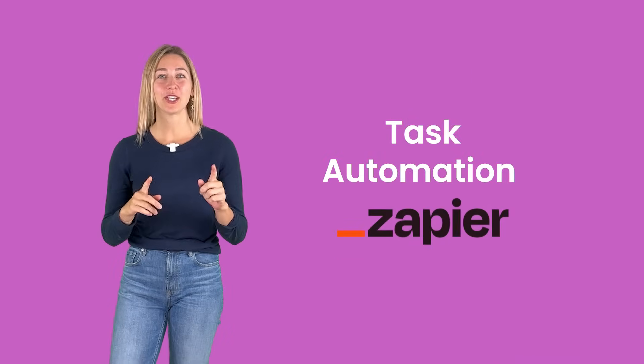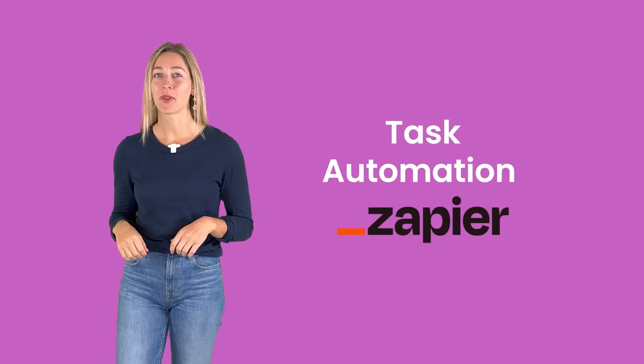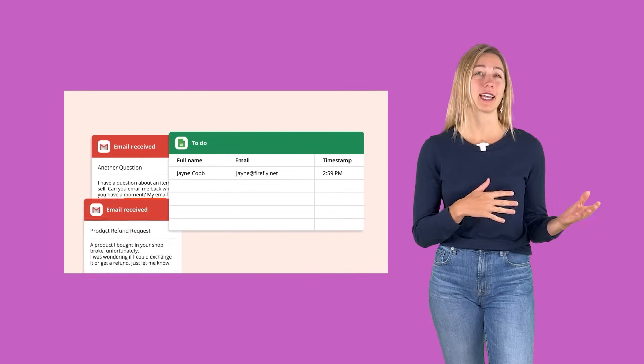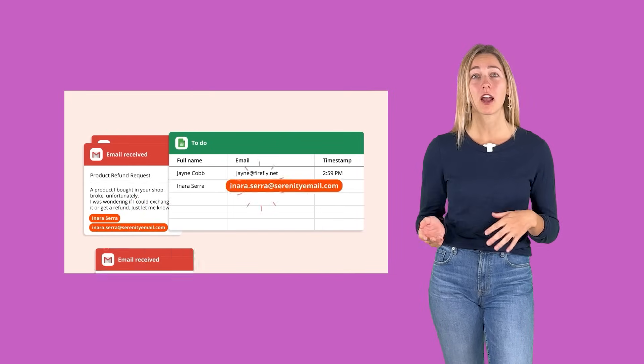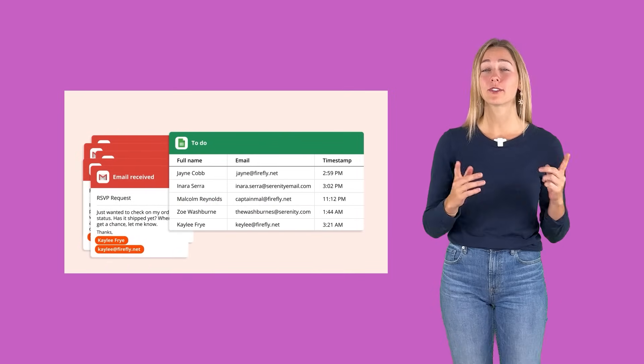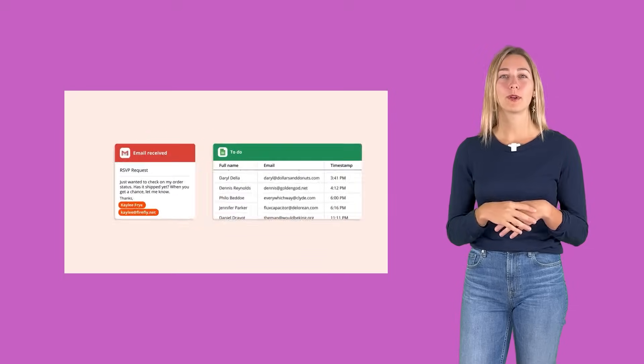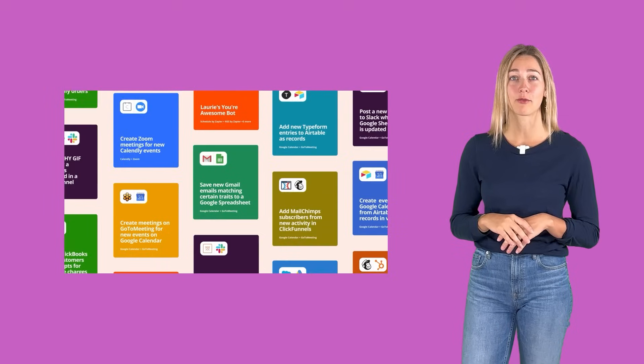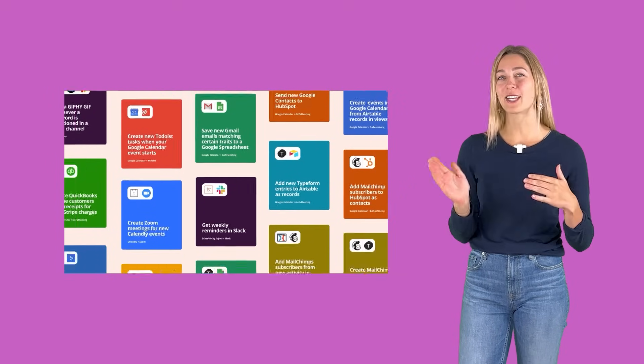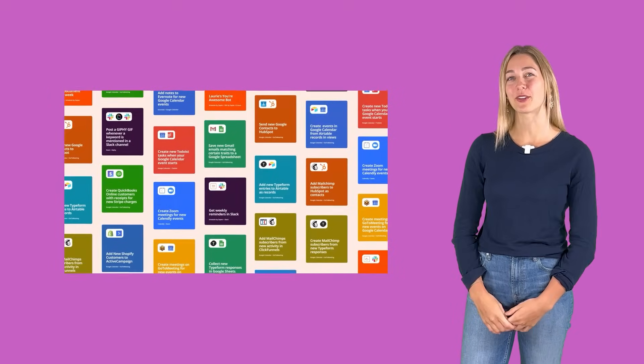For task automation, use Zapier. Streamline your administrative work and reduce the amount of time spent on admin tasks like collecting and moving data or sending out email reminders with this fan favorite. Zapier connects to a whole bunch of different software tools so that you can automate those tasks across all those platforms, giving you more time to focus on your teaching and interacting with your students.